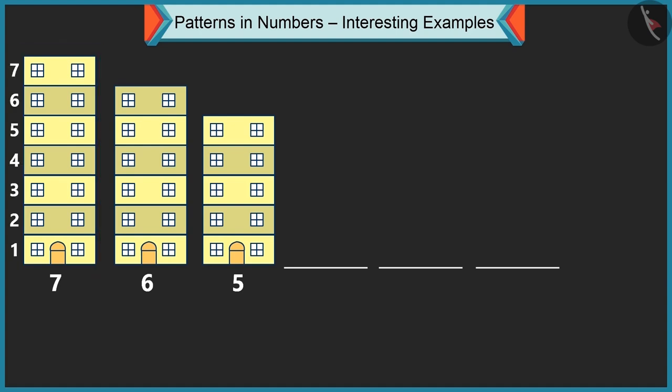The first building has seven floors. And how many floors are there in the second building? The second building has six floors. And the third building has five floors.